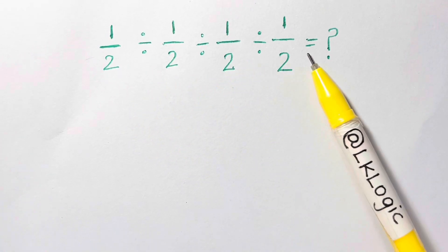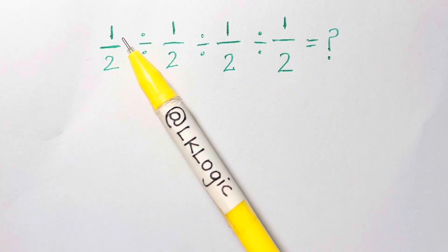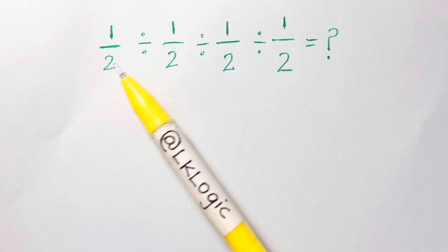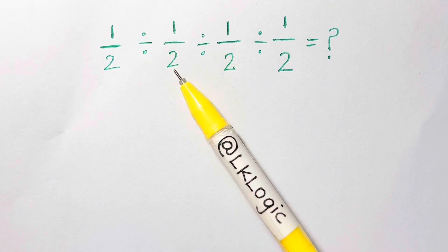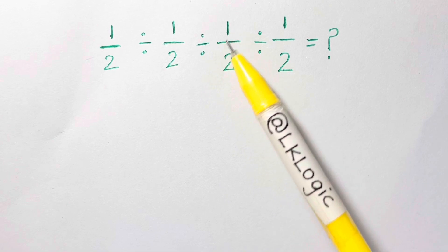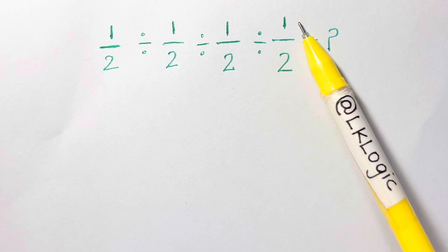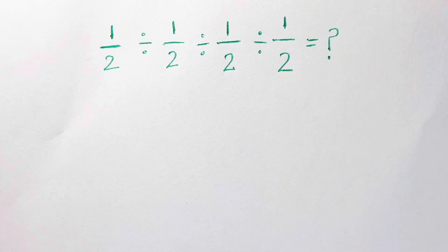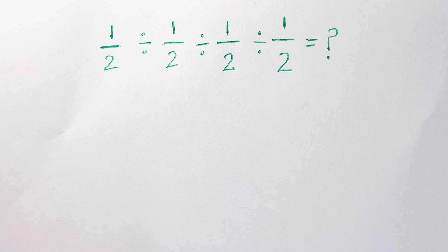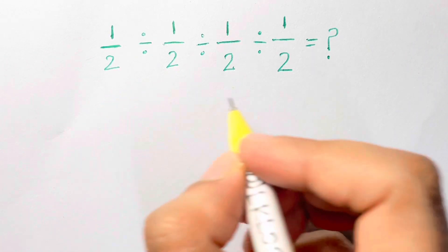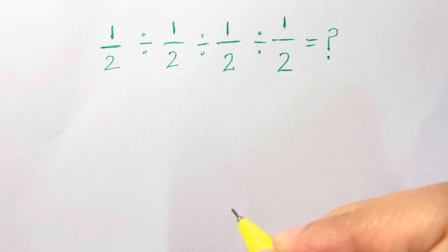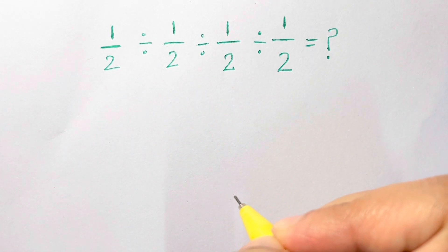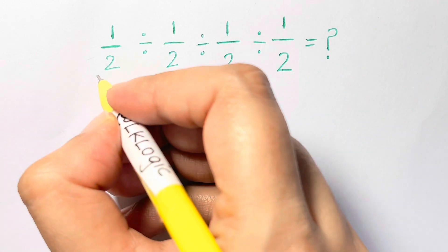Hi guys, I have a nice problem for you: 1 over 2 divided by 1 over 2 divided by 1 over 2 divided by 1 over 2 equals what? To solve this, you're going to follow the PEMDAS rule. Whenever you have divisions and multiplications, the precedence goes from left to right.